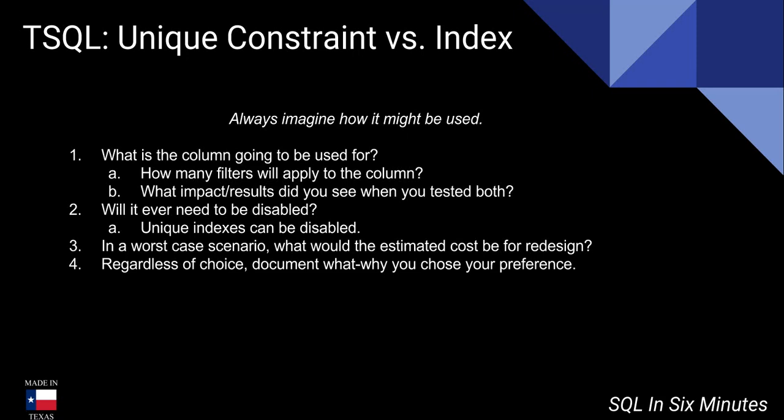Number two: will it ever need to be disabled? Unique indexes can be disabled. Number three: in a worst-case scenario, what would be the estimated cost for redesign? Make sure you document that. Regardless of what choice you make, document the what and why of your preference — it should be two or three sentences at most. You can put that in the application documentation and say why you chose this option.